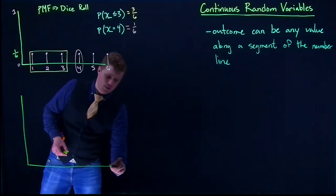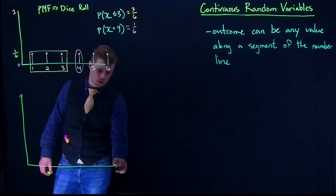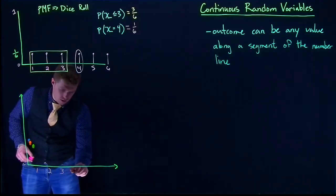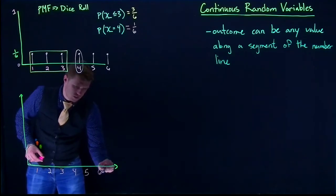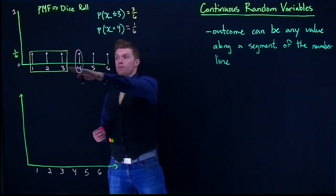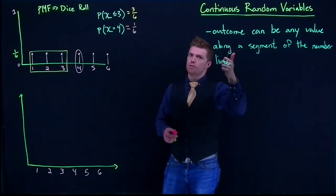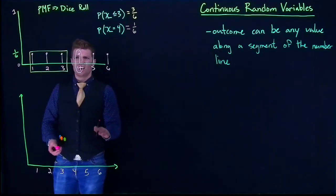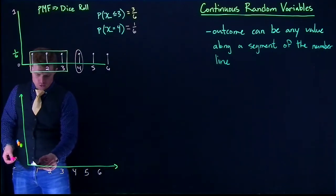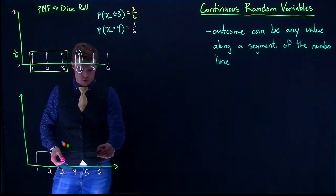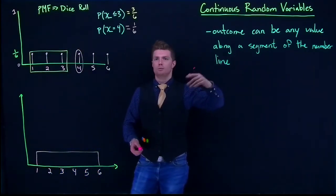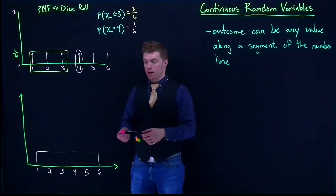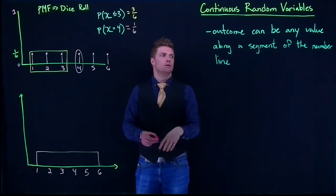Let's draw out the probabilities for the continuous case, going from 1 to 6 on our axis. One of the main differences is that with continuous random variables, the outcome can be any value along the segment of the number line from 1 through 6. So we draw a rectangle. Is it possible I'd wait 2.5 hours? Sure. 3.14 hours? Absolutely, because the outcome can be any value along the number line.